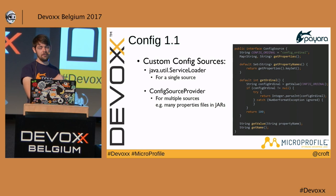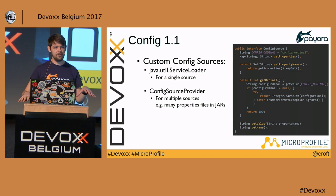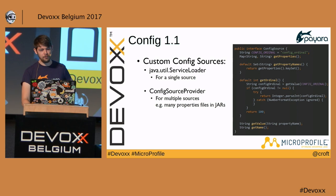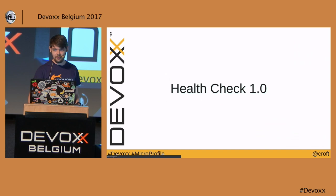To register a custom config source, use the java.util.ServiceLoader method. If you have multiple config sources — say, properties files across multiple JAR files — you can use a ConfigSourceProvider, which lets you load multiple sources at once.